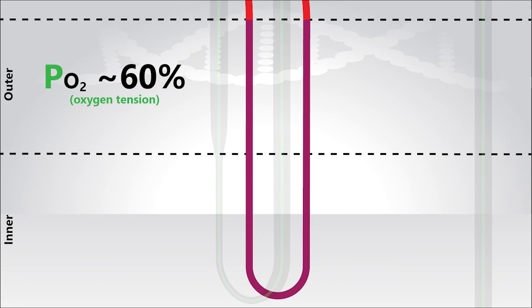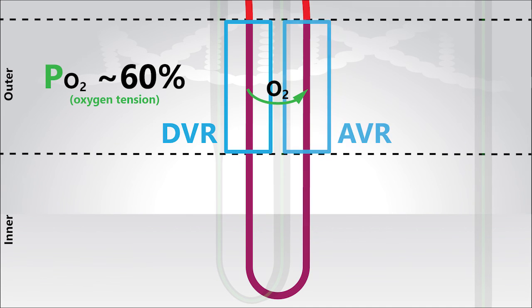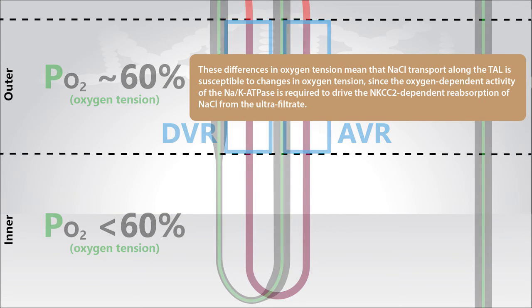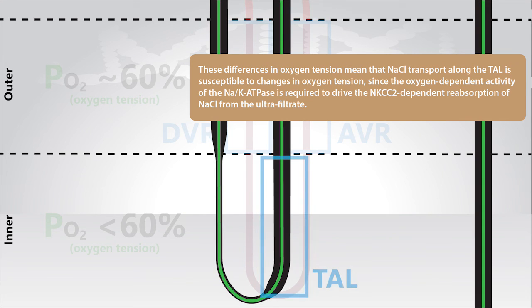And because oxygen is shunted from the descending vasa recta to the ascending vasa recta, the oxygen tension of the inner medulla will be even lower. These differences in oxygen tension mean that sodium chloride transport along the thick ascending limb is susceptible to changes in oxygen tension, since the oxygen-dependent activity of the sodium-potassium ATPase is required to drive the NKCC2-dependent reabsorption of sodium chloride from the ultrafiltrate along the thick ascending limb.